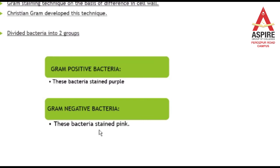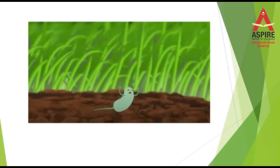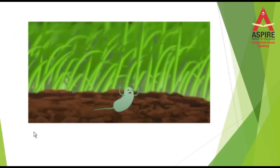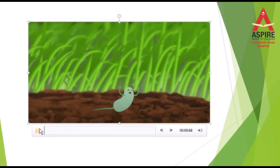These are the two groups of bacteria based on the staining technique. Gram-positive bacteria are those which stain purple color, and gram-negative bacteria are those which stain pink color. To understand the reasons for purple and pink color, we will watch a video. Let's start the video and see what the reasons are.